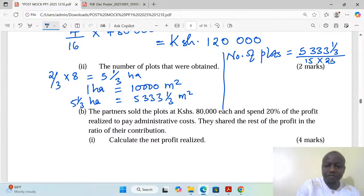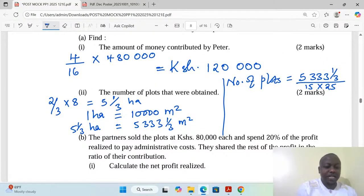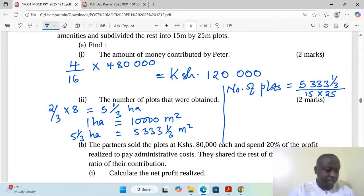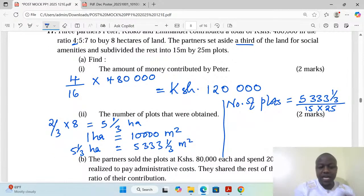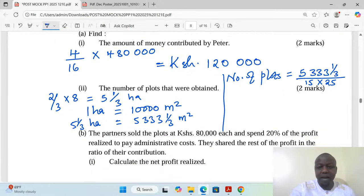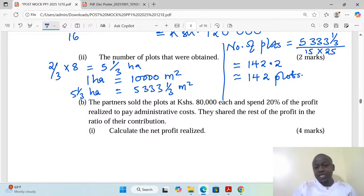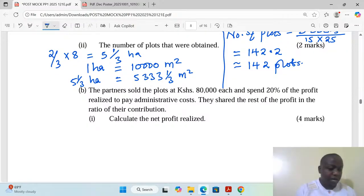Plots are measuring 15 by 25 so we have the measurement of the rectangular plots already identified. We can find area, meaning that with area of the plot and the area of the land being subdivided we can get the number of plots. We get 142.2 but now that it's a number of plots we stick to 142, the complete plots which will be identified. The extra material of land shall be used maybe for the surveyors as part of the paths, roads in between the plots, and such other things.